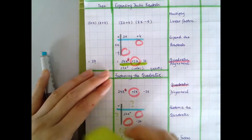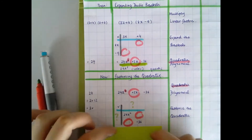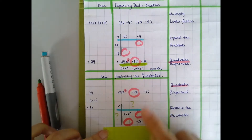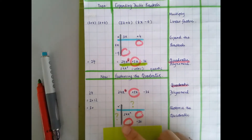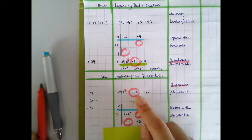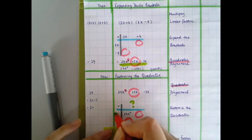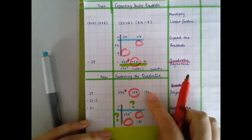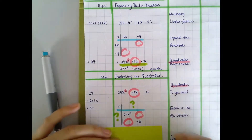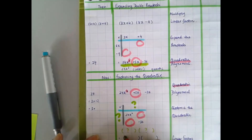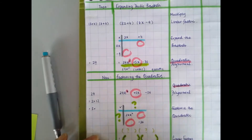We're still going to use our grid, but this time we can fill in different things. We know what goes inside our grid: we have the 24x squared, we have the negative 36, and we know that these two will collect to create that positive 5x. But the question is, what are the factors? What two things multiply to give me this quadratic polynomial? We're going to factorise our quadratic and create our linear factors.